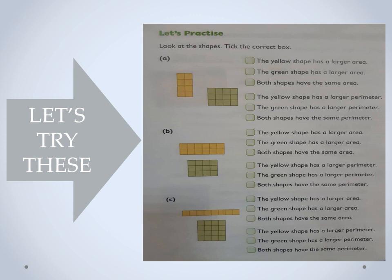Now the second set of questions: the yellow shape has a larger perimeter. Let's find the perimeter. The yellow shape has a length of two and a width of four. The opposite side of the width is also two, and the opposite side of the length is also four.